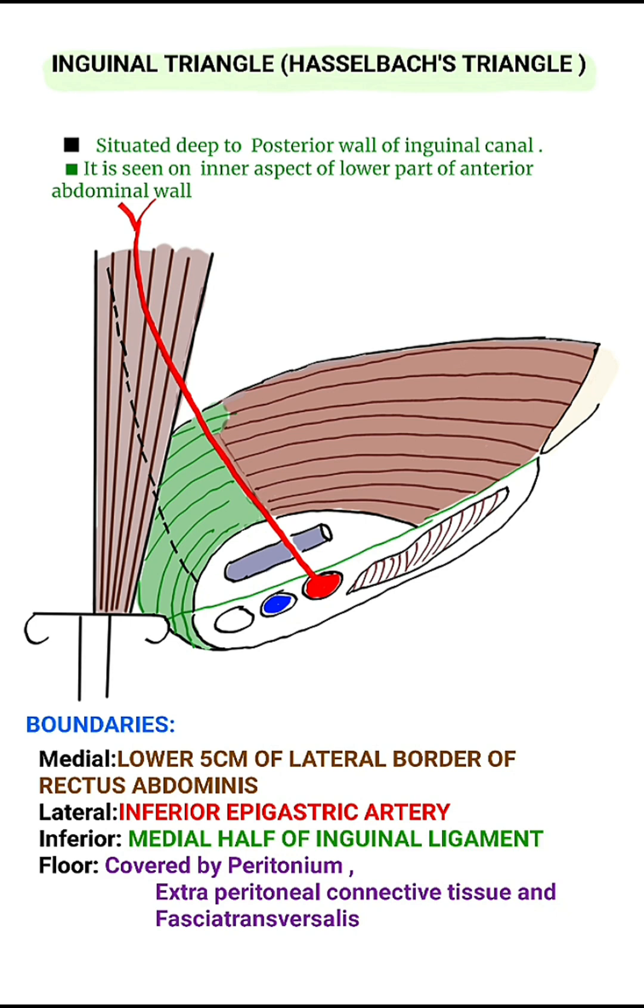It is seen on inner aspect of lower part of anterior abdominal wall. Boundaries: Medially, lower 5 cm of lateral border of rectus abdominus muscle.